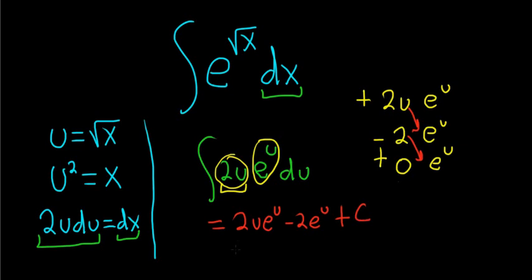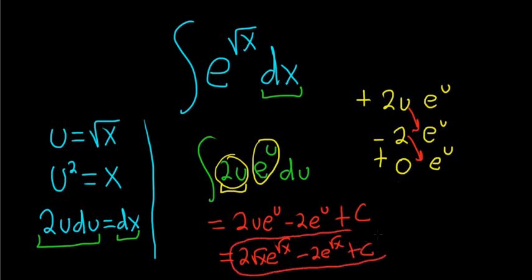That's almost it. We just got to replace u with the square root of x. This is 2 square root of x e to the square root of x minus 2e to the square root of x plus c. And that is the final answer.